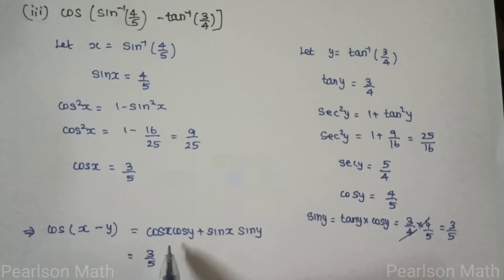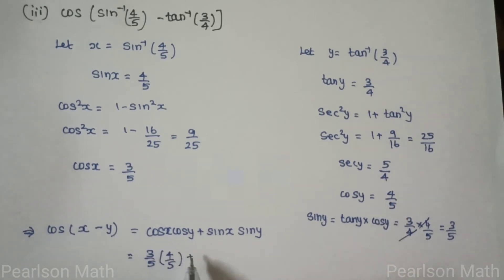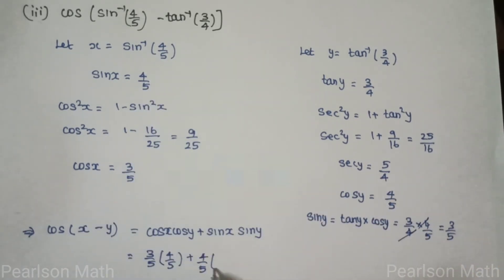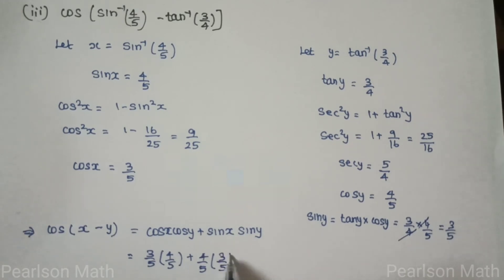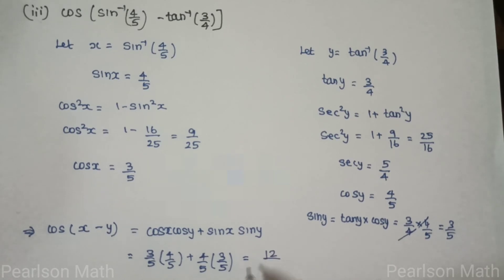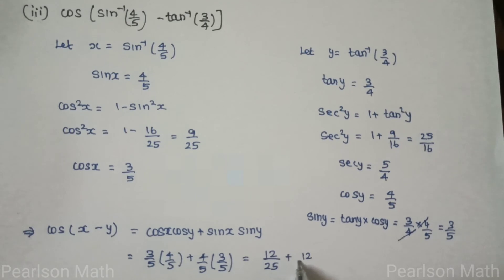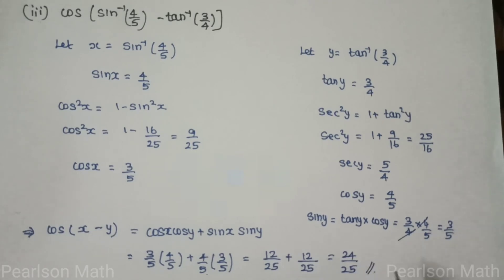Now computing cos of (x minus y) equals cos x times cos y plus sin x times sin y. Substituting: cos x equals 3 by 5, cos y equals 4 by 5, sin x equals 4 by 5, sin y equals 3 by 5. So the result is 3/5 times 4/5 plus 4/5 times 3/5, which gives 12 by 25 plus 12 by 25, equals 24 by 25.